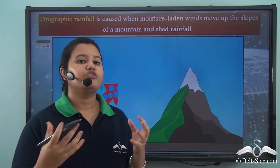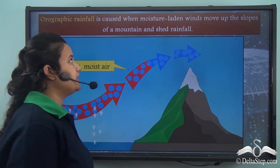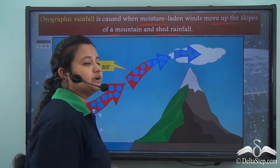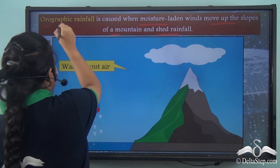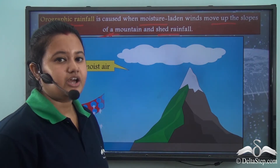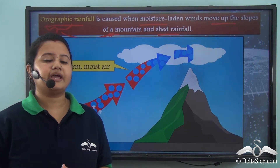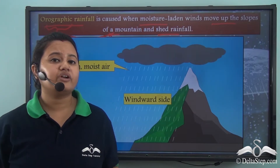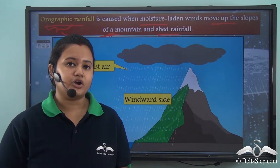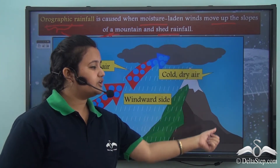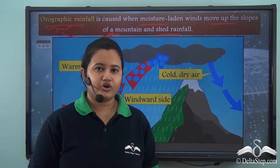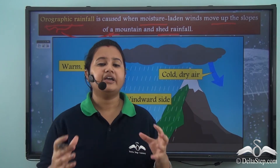This type of rainfall, caused when moisture-laden winds move up the slopes of a mountain and shed rainfall, is known as orographic rainfall — where 'orographic' means related to a mountain. The Atacama Desert is a dry region because it lies on the leeward side of the Andes Mountains and therefore receives little rainfall, making it a dry, arid region.